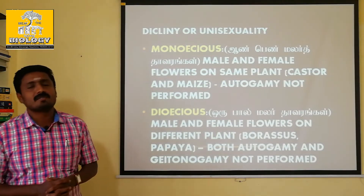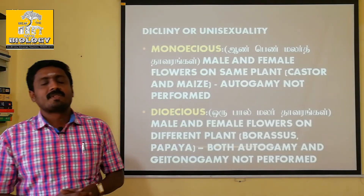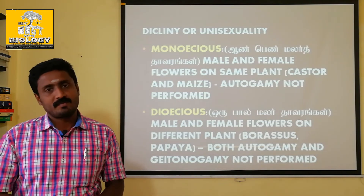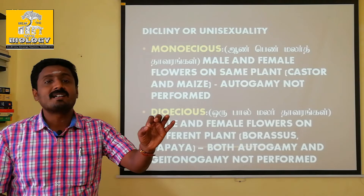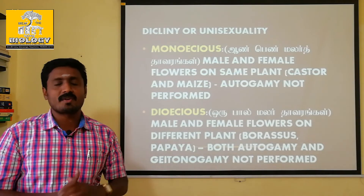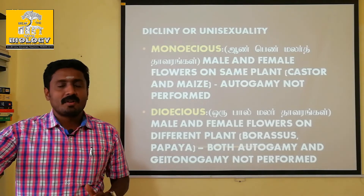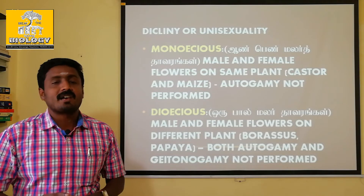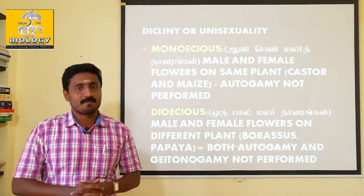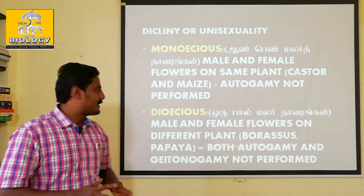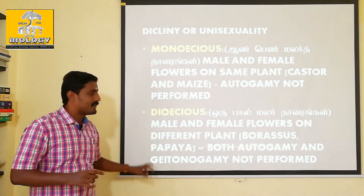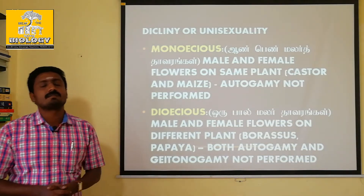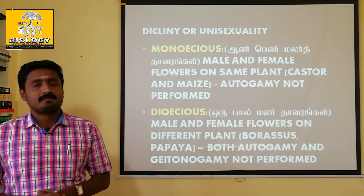Dioecious. One plant has male flowers and that total plant is a male plant. That plant with female flowers is a female plant. Female plant has female flowers. Examples: Borassus, papaya. Borassus is a palm tree and papaya is a common example.